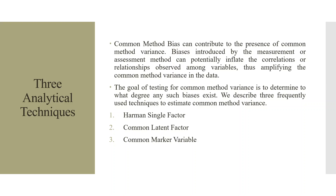Common method bias can contribute to the presence of common method variance. Biases introduced by the measurement method can potentially inflate the correlations observed among the variables, thus amplifying the common method variance in the data. The goal of testing for common method variance is to determine to what degree any such biases exist. We describe three frequently used techniques: the first is the Harman single factor, the second is the common latent factor — both discussed in the previous video — and the third is the common marker variable, which we will discuss today.